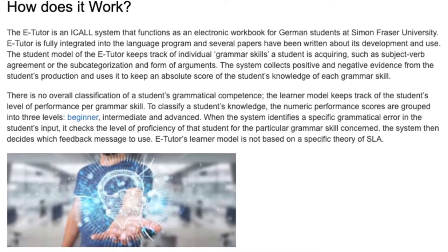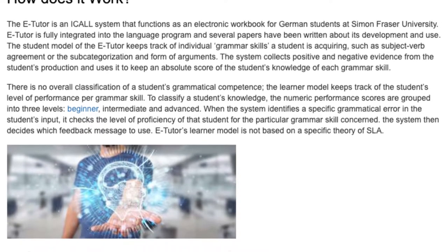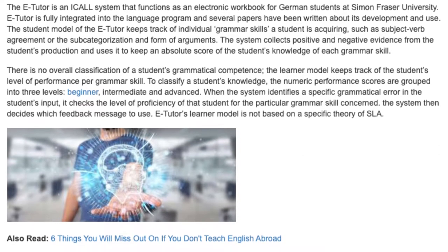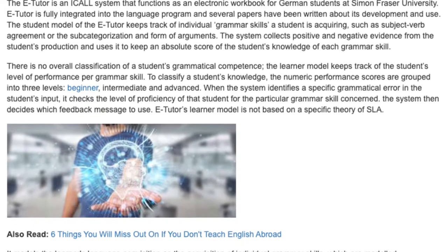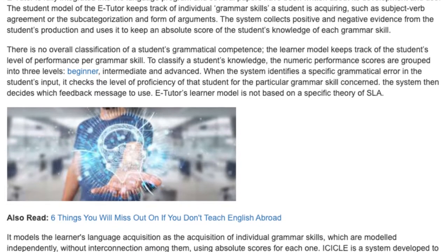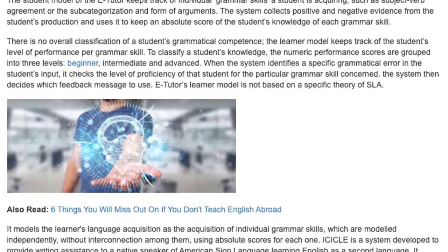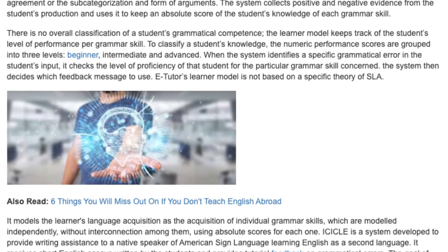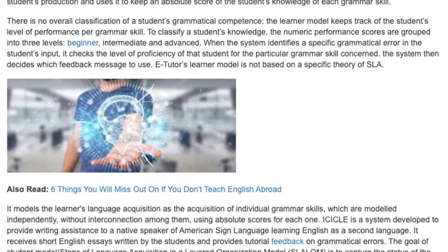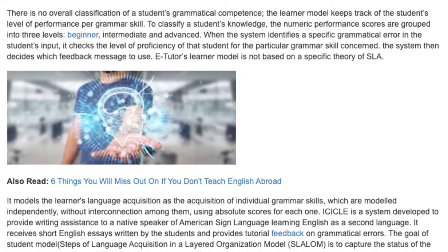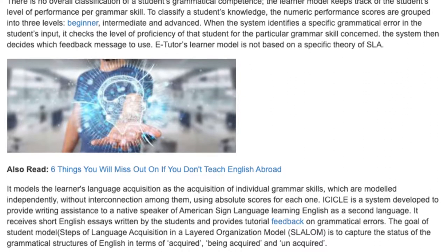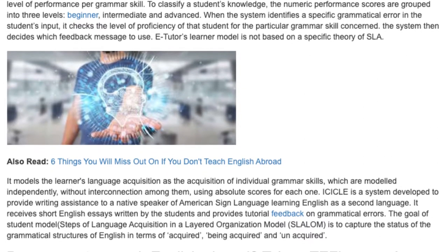To classify a student's knowledge, the numeric performance scores are grouped into three levels: beginner, intermediate, and advanced. When the system identifies a specific grammatical error in the student's input, it checks the level of proficiency of that student for the particular grammar skill concerned. The system then decides which feedback message to use.